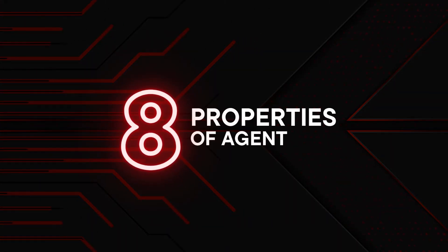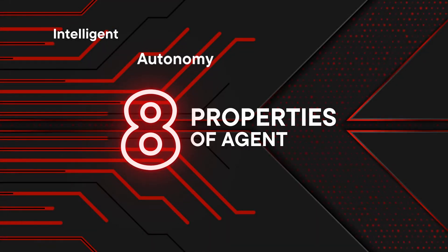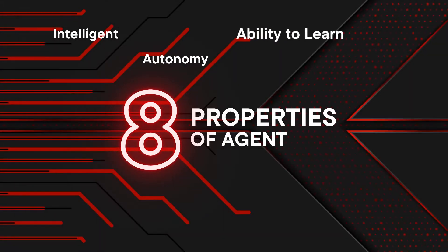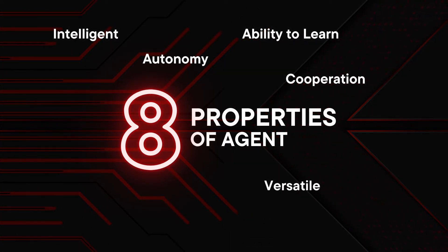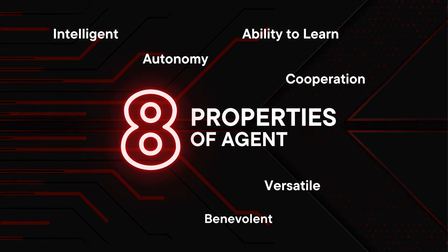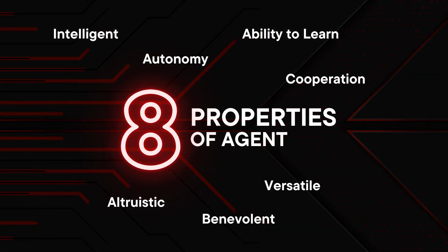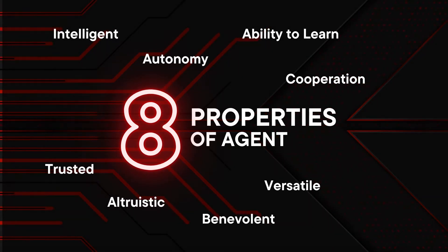There are eight properties of an agent. Firstly, intelligent — agents have additional domain knowledge. Next, autonomy — the ability to act and make decisions independently. Ability to learn, where it gains new information and acts based on it. Cooperation. Versatile, where it is able to carry out different tasks. Benevolent or helpful, and altruistic — agents are kind and strive to do the right thing. And finally, trusted to settle the task.